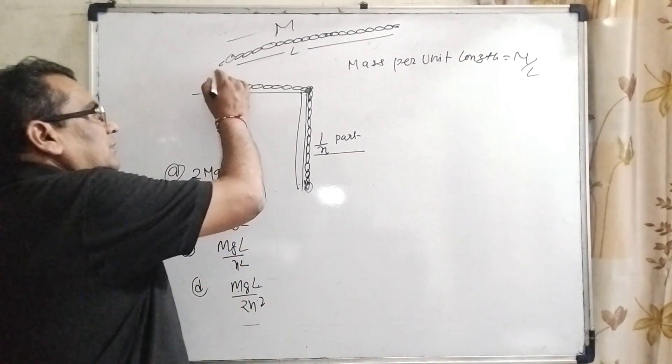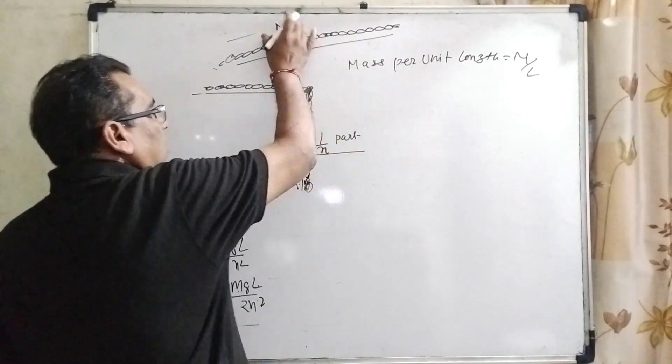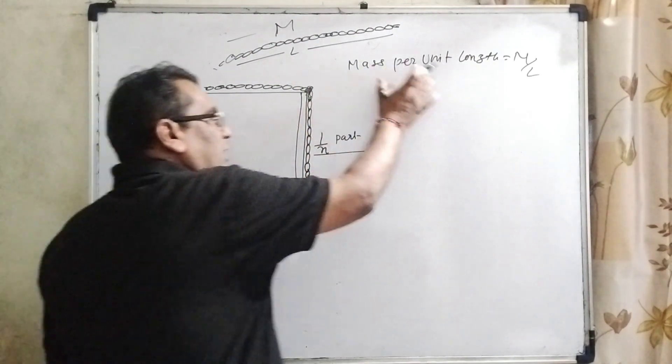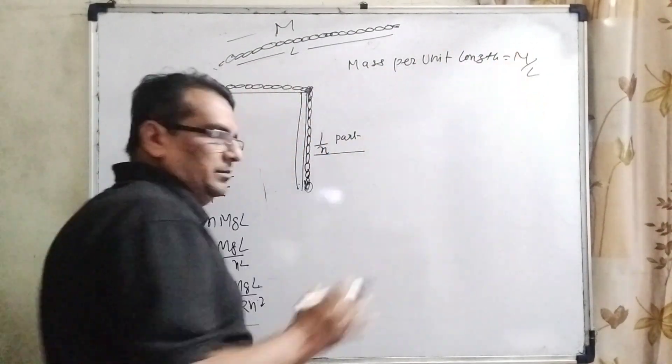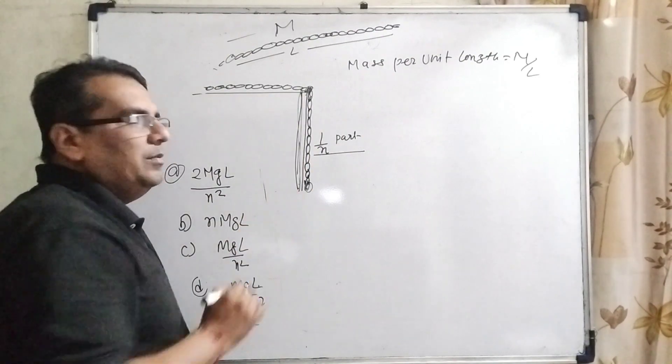Here we have given the cable of length L and total mass is M. Then mass per unit length is M by L. Then what is the mass of this hanging part?